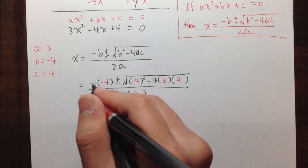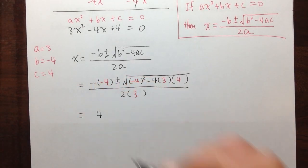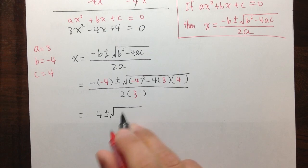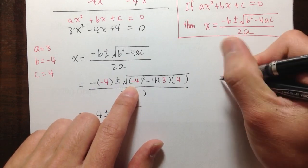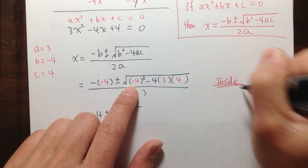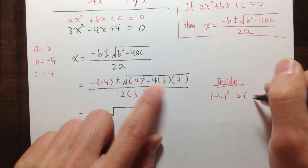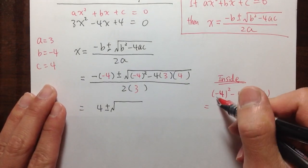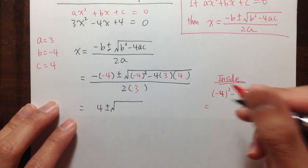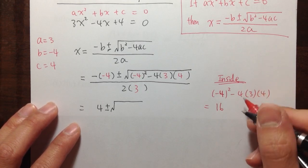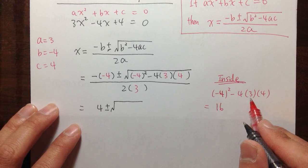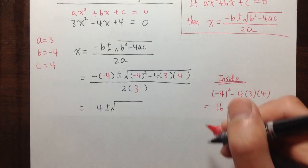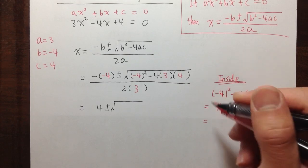Now let's run through the calculation. First, negative times negative 4 gives positive 4. Then I need to figure out what's inside the square root: negative 4 squared minus 4 times 3 times 4. Negative 4 squared is positive 16. Then 4 times 3 is 12, and 12 times 4 is 48. So I have 16 minus 48, which gives negative 32.